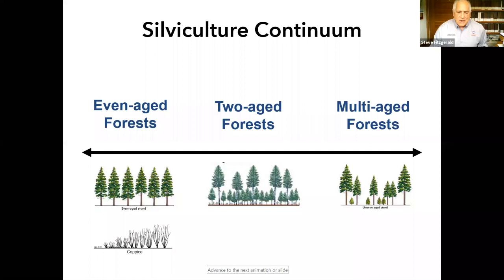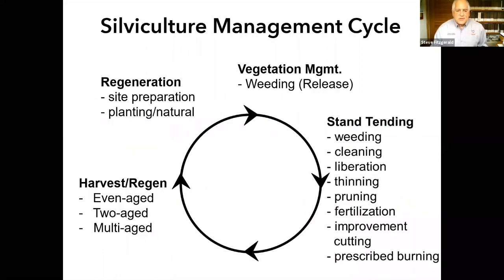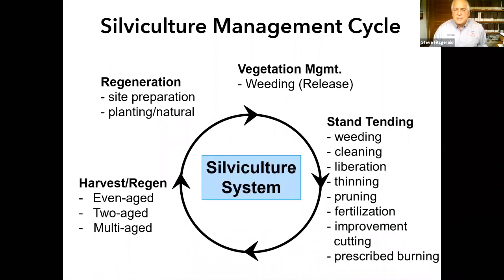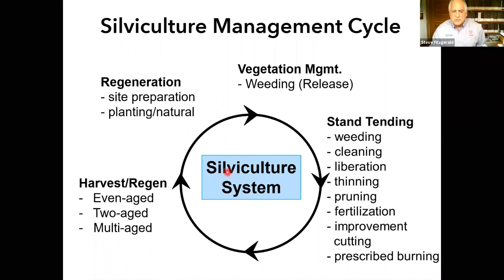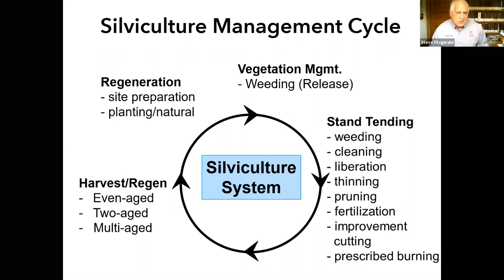Another way to look at this is through a harvest system where you regenerate — you're planting trees, controlling vegetation — and as the trees grow over time you're tending to them through thinning, pruning, or other treatments, eventually conducting what we call a harvest regeneration treatment to create an even-age, two-age, or multiple-age forest. It's really about how you bring regeneration into your stand and the growing space you create — particularly true for multiple-age forests.